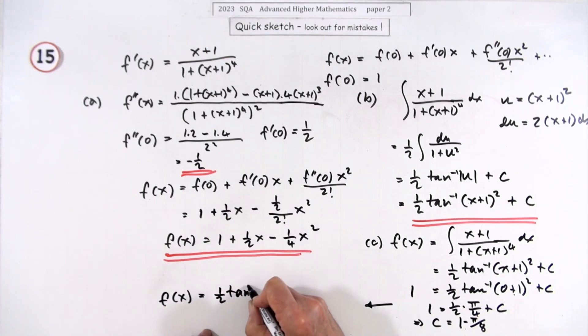So f(x) is equal to (1/2)tan⁻¹((x+1)²) plus, just leave it like that, or you could put it into a single fraction, 1 - π/8.